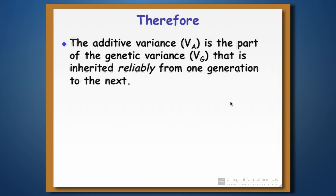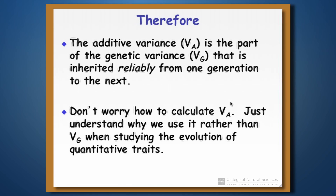The important thing is that I don't want you to worry about how to calculate VA — that tends to be complicated and requires some statistics. What's critical is to understand conceptually why we use additive genetic variance when studying quantitative trait evolution rather than VG. What we want to know is what can be reliably inherited, because it's what's reliably inherited that actually evolves. So we use additive genetic variance, and we'll tend to use narrow sense heritability rather than broad sense heritability.